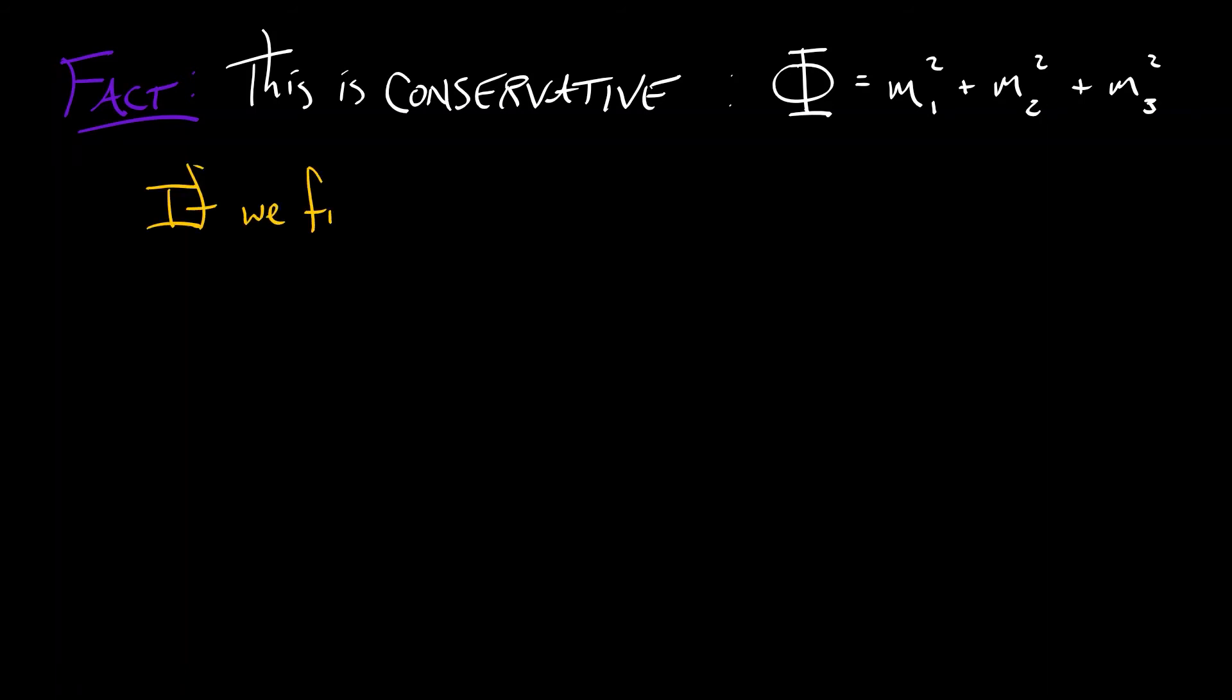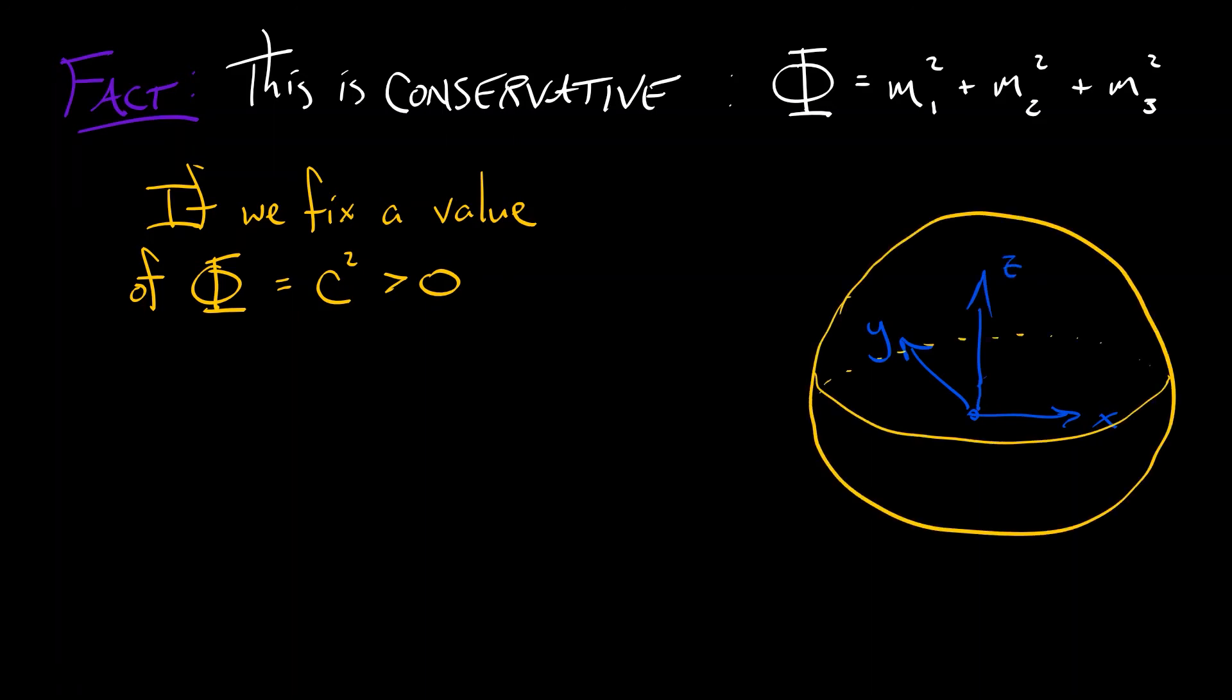That means if we fix a value of phi, then that is an invariant surface. In this case, if we say phi is equal to c squared, a strictly positive quantity, then what we get as the level set of phi is a round sphere centered at the origin radius c.